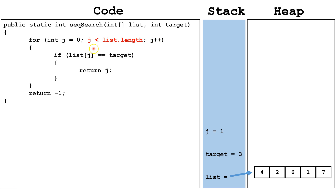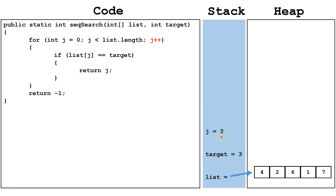Next, we're going to check: is j less than list.length? 1 is less than the list length, which is 5, so we're going to continue. Now, we're going to check again: is list index j equal to the target? List index j is 2, because j is currently 1, and our target is still 3. This is a false statement, so we're going to skip this block of code again. We're going to get to the end and increment j by 1, so now j equals 2.